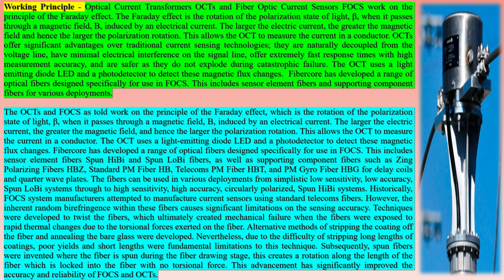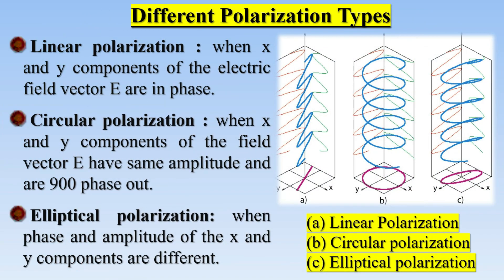OCTs offer significant advantages over traditional current sensing technologies. They are naturally decoupled from the voltage line, have minimal electrical interference on the signal line, offer extremely fast response times with high measurement accuracy, and are safer as they do not explode during catastrophic failure. The OCT uses an LED and a photodetector to detect magnetic flux changes. FiberCore has developed a range of optical fibers designed specifically for use in FOCS, including sensor element fibers and supporting component fibers for various deployments.